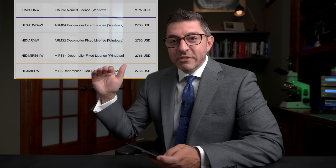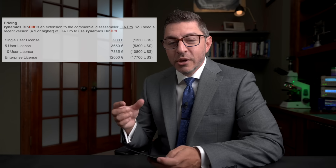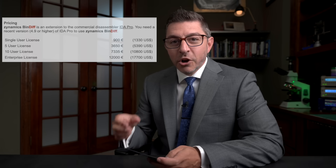IDA Pro is priced where they believe it is, which is really expensive. BinDiff was started by a company called Zynamics, a German company, probably founded in the early or mid 2000s. At some point it got acquired by Google. The BinDiff plugin only worked with IDA Pro and was also expensive — around a thousand dollars per license — while IDA Pro itself costs thousands.